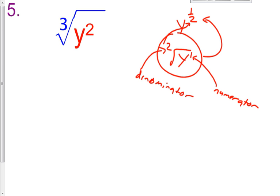So you might want to write this down for number 5: the exponent, that is the number in the numerator when you change into rational form, and the index, this becomes the number in the denominator.